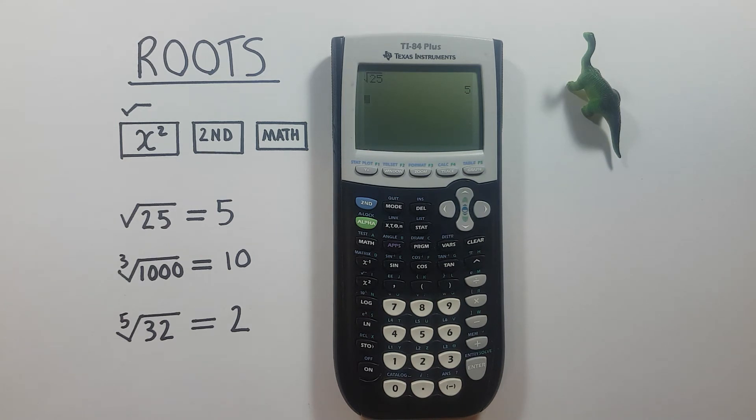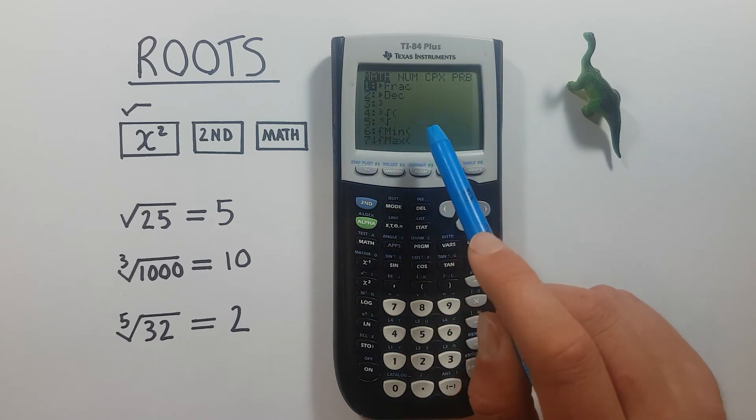But what about numbers that aren't square roots, like say finding the third root of 1000 or cube root of 1000? Well to do that we press the math key and that brings us to this menu here.